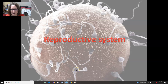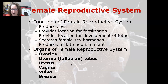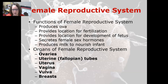Hi, this is Dr. A, and in this anatomy and physiology review we are going to look at the female reproductive system. The functions of the female reproductive system are to produce the ova or the egg, to provide a location for fertilization, a location for the development of the fetus, and it also secretes the female sex hormones.